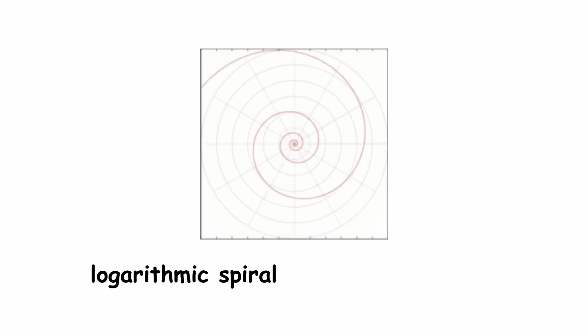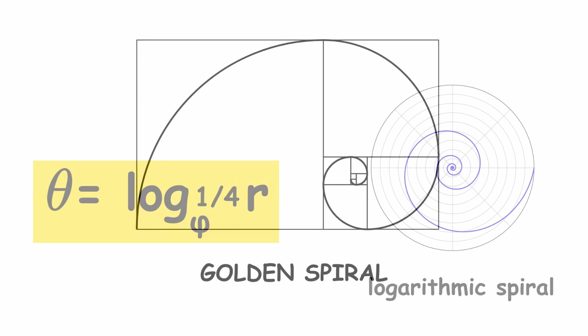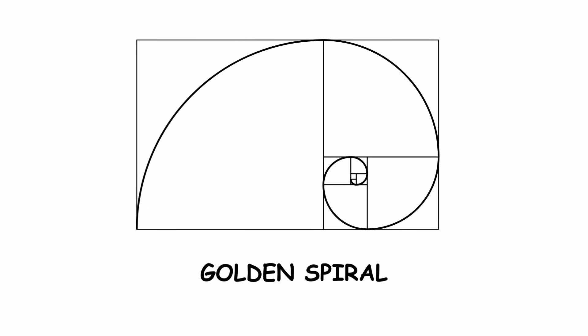Now, imagine a logarithmic spiral that grows by a factor of phi each quarter turn. We want phi as the base of exponentiation, and each quarter turn should increase the exponent by 1. That gives us this equation, where we divide theta by 1 fourth turn. And with that, we have the golden spiral.